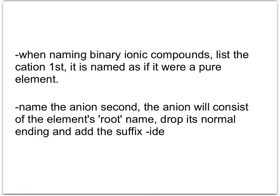When naming binary ionic compounds, it's important that you list the cation first. The positive one goes first, or the metal. You name it as if it's just the pure element. You just give it the metallic name. There's no change. The anion, however, you name that second. The anion will consist of the element's root name. You'll drop its normal ending and add the suffix '-ide.' I'll show you some examples of this on the next slide.